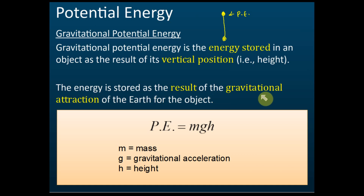The energy is stored as the result of the gravitational attraction of the Earth on the object. If there is no gravitational attraction, then no matter where you put the object, there's no potential energy change. Potential energy is given by the formula: PE equals mgh.